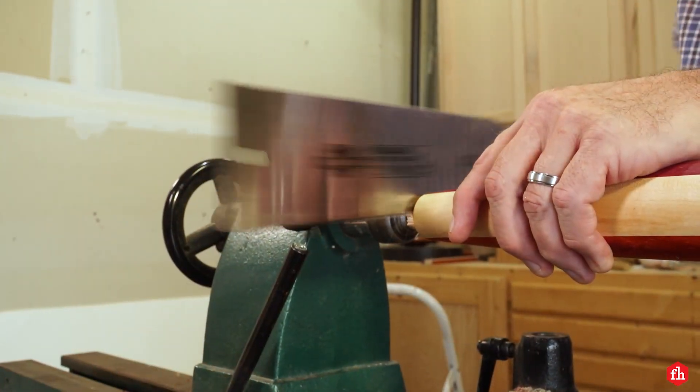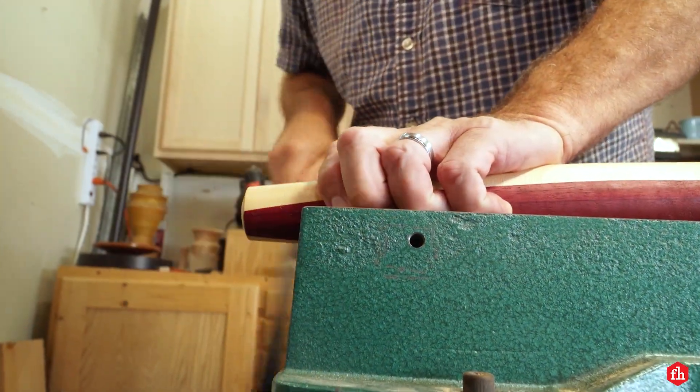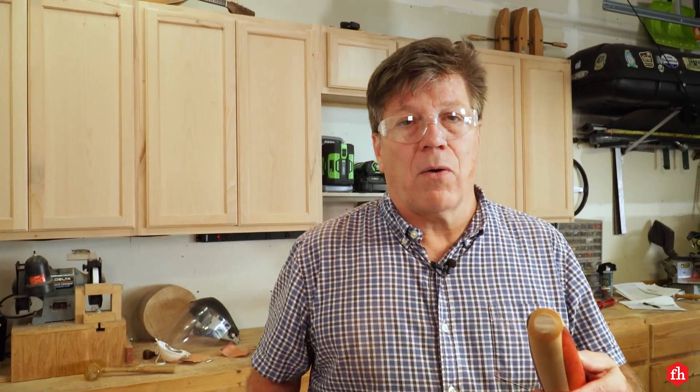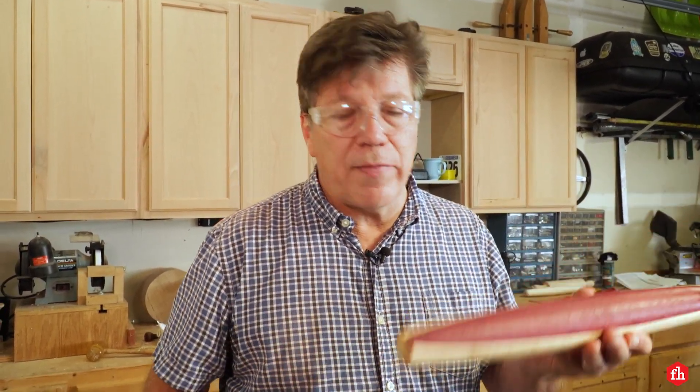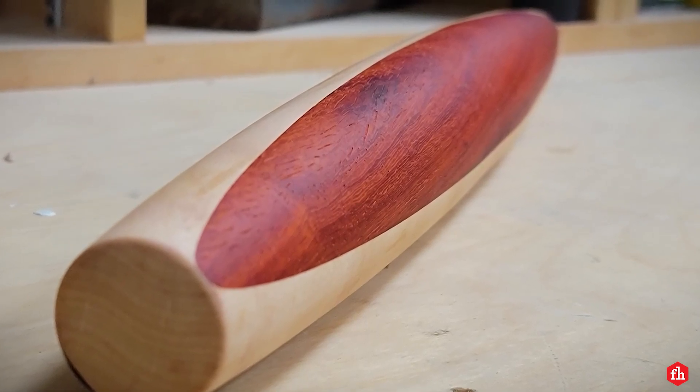A Japanese pole saw works well for parting off the ends. All right, I'm going to sand the ends and put some oil on there and that one's finished. We're going to move on to making a rolling pin with handles.